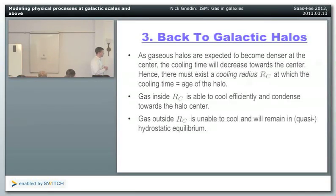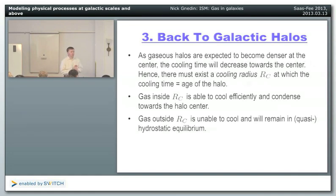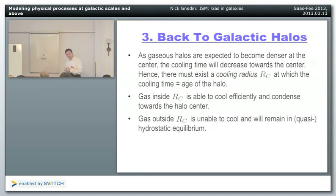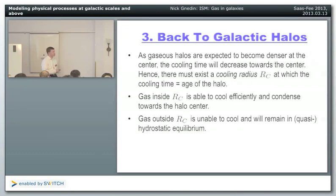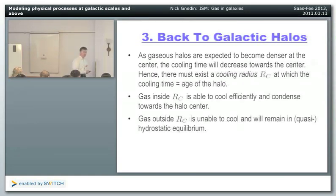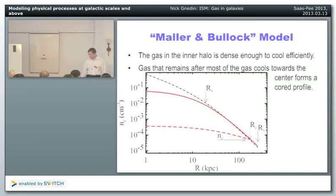In the morning we finished on cooling functions, so now we're going back to galactic halos. Normally you'd expect that if you have a cloud of gas rotating in a dark matter potential, it should be dense at the center. If it's dense at the center, the cooling rate is higher there because cooling rate goes as density squared. For many dark matter halos you'd expect that the cooling time at the center is short and the cooling time on the outer part is long.